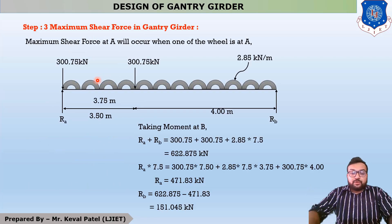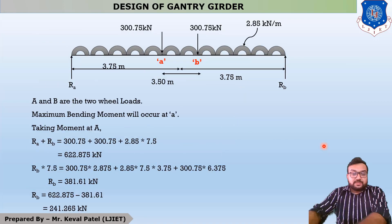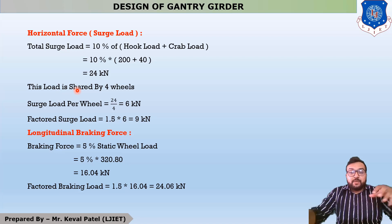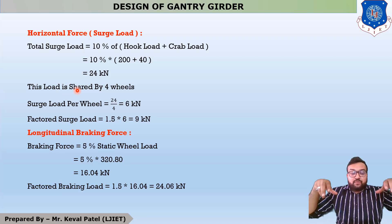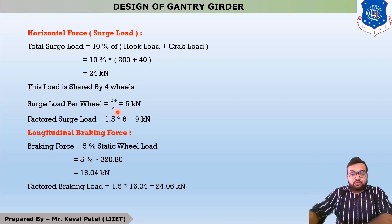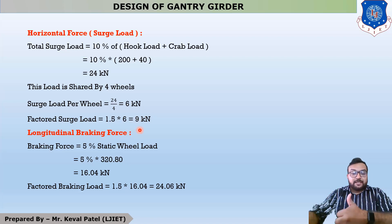These 24 kilonewtons will be taken by all 4 wheels. If 24 kN is taken by 4 wheels, then the load per single wheel is 24 divided by 4 equals 6 kilonewtons. This 6 kilonewtons is the unfactored surge load, so the factored surge load is 9 kilonewtons.